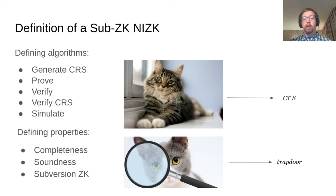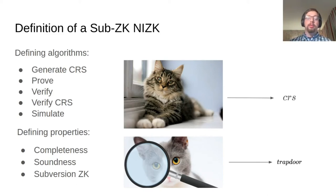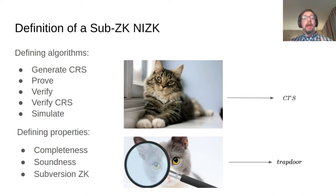The simulate algorithm is able to create real-looking proofs based on knowing just the statement, plus some additional information like a trapdoor, but importantly not the witness to the statement. The defining properties are completeness and soundness as before. Subversion zero knowledge is the new one: suppose there is some cat which generates the CRS — it should be possible to extract, by examining this cat, a trapdoor that you can use to simulate proofs that look indistinguishable from real proofs. So the real proofs cannot depend on the witness in any serious way.